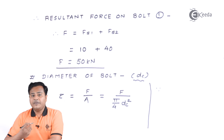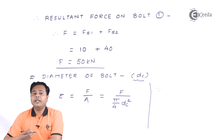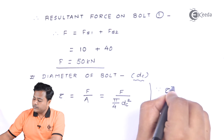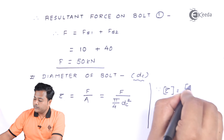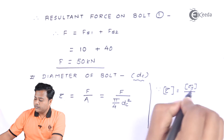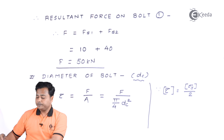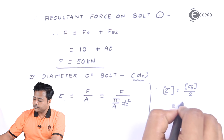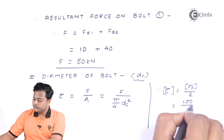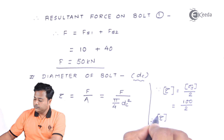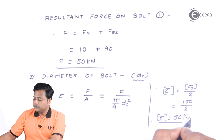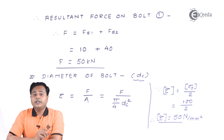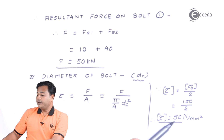Carbon steel is a ductile material, and for ductile materials there is a known relationship between shear stress and yield stress. Using this relationship, the allowable shear stress is 0.5 times the allowable tensile stress, which gives 0.5 times 100, equal to 50 Newton per millimeter squared. This is the allowable shear stress value to be used for finding the diameter.